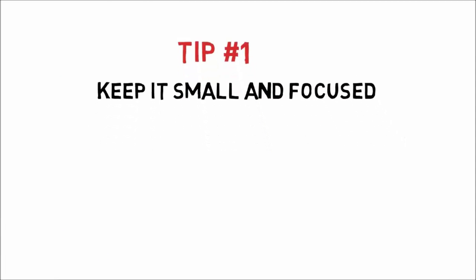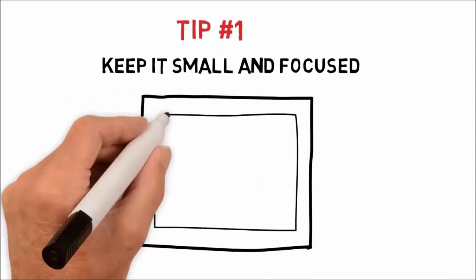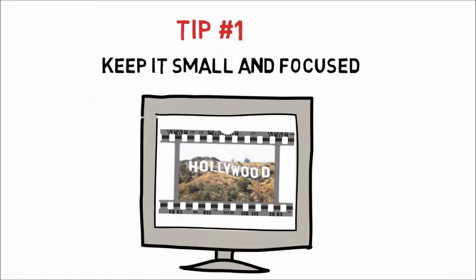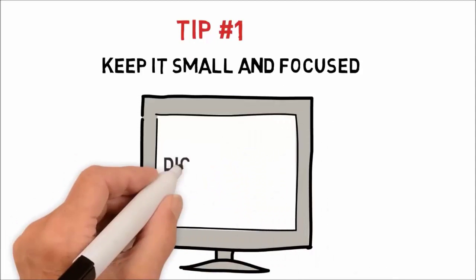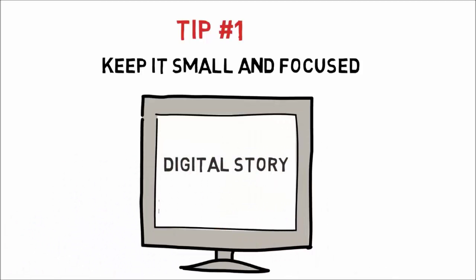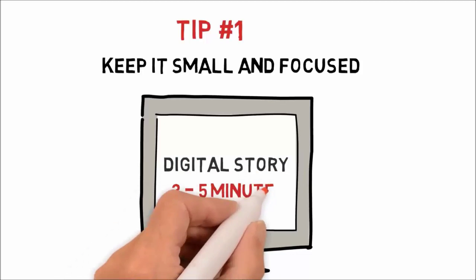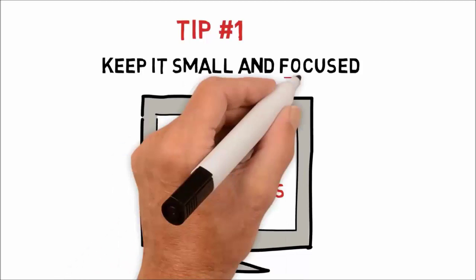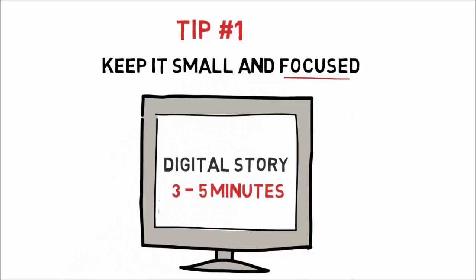Tip 1: Keep it small and focused. Remember, you are not writing a script for a cinematic movie. You are writing it for a digital story, which is only going to be about 3 to 5 minutes long. Focusing on a specific problem or topic will help you create a better digital story.